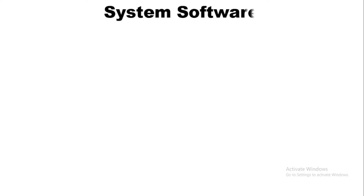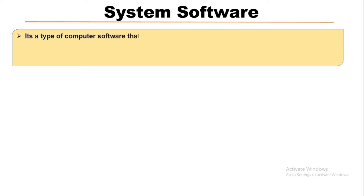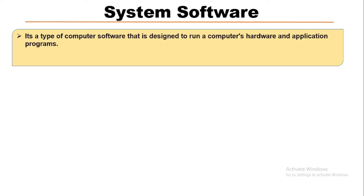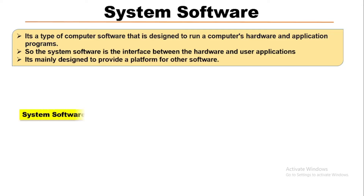In this video we will learn about system software. System software is the type of computer software that is designed to run computer hardware and application programs. System software is the interface between the hardware and user applications, and it is mainly designed to provide a platform for other softwares.